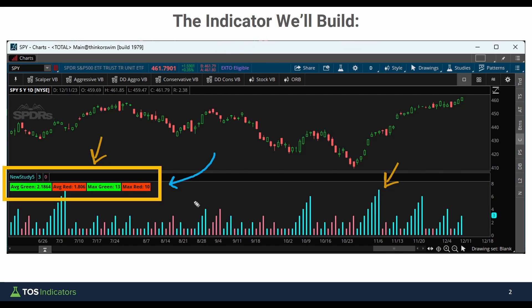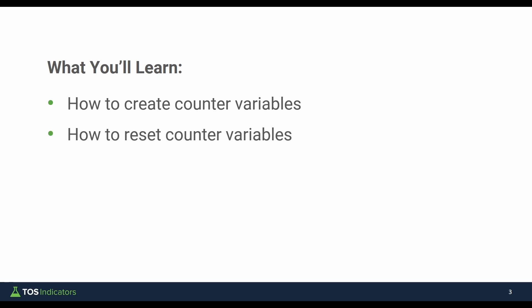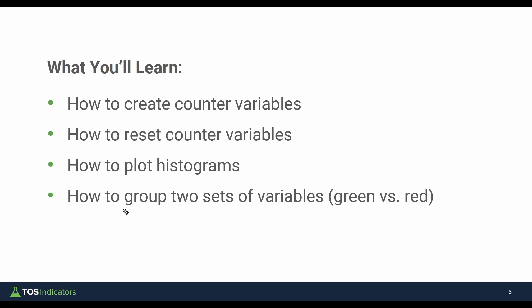With all of this information, you have a better idea of what to expect in the S&P 500, and it's a fun ThinkScript exercise. Here's what you'll learn in this tutorial: how to create counter variables, how to reset those counter variables (we'll reset the green counter when we have our first red candle), how to plot histogram values, and how to treat two different sets of variables and maintain each distinct grouping — the green candles and the red candles.